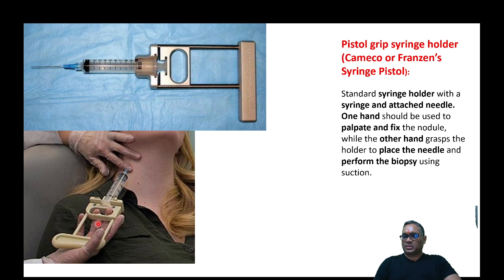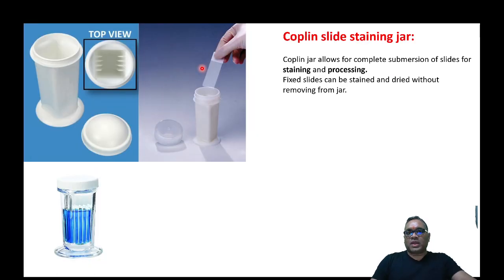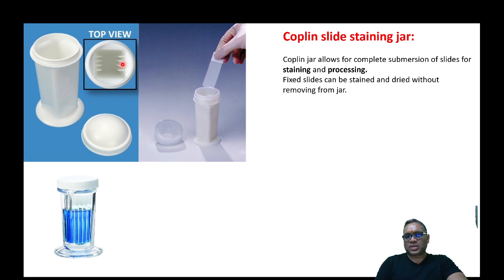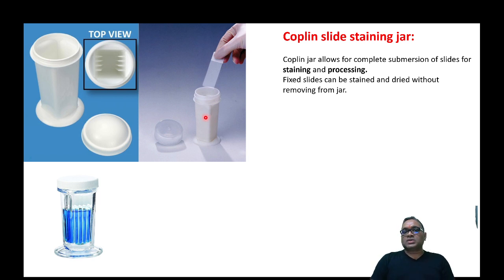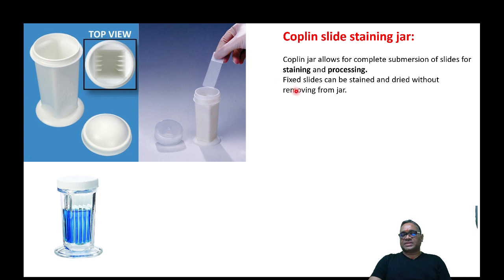After taking out the biopsy, you prepare the specimen on the slide and keep it inside the coupling jar. The coupling jar can be plastic or glass and accommodates five slides. The advantage of the coupling jar is that fixation and staining can both be done within the jar itself without removing the slides, and it can also be used for smear transport.